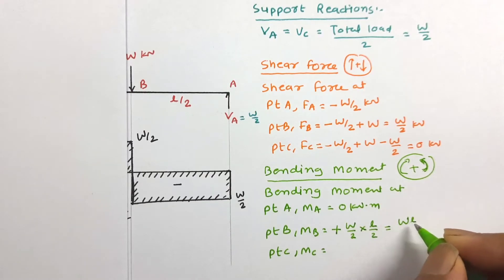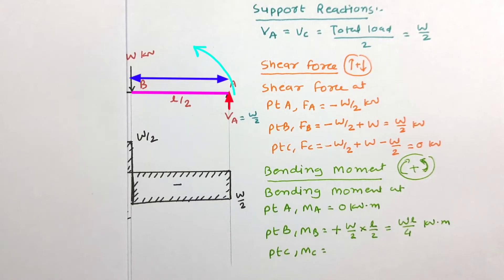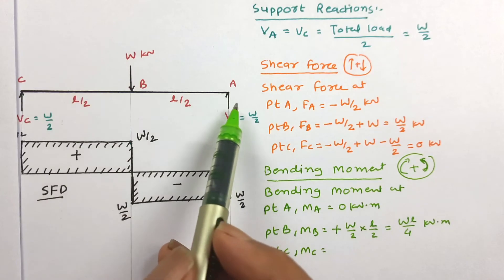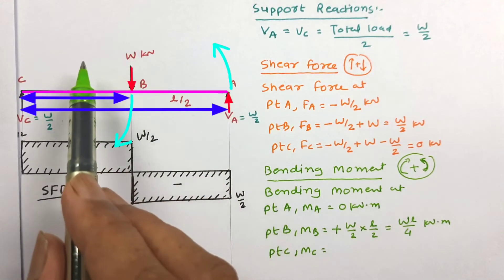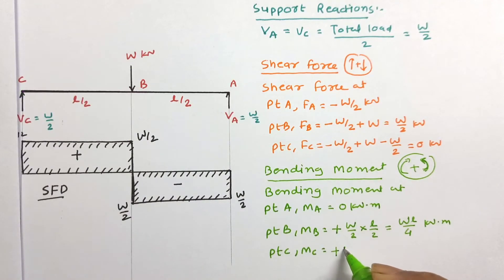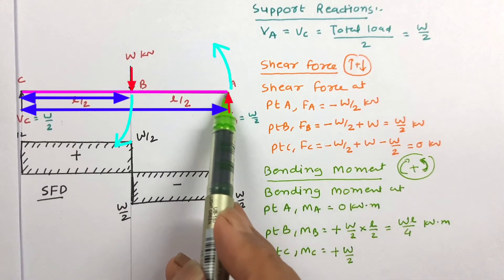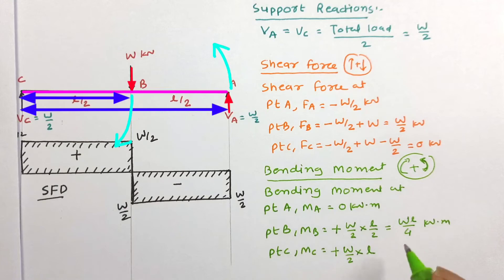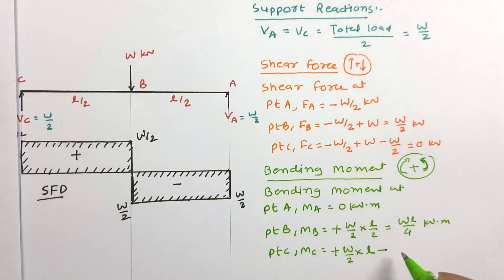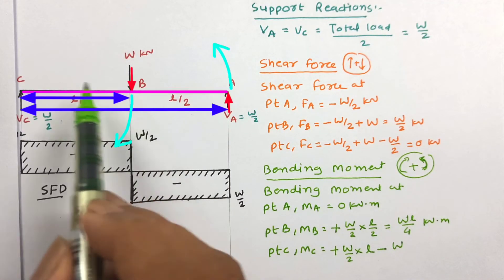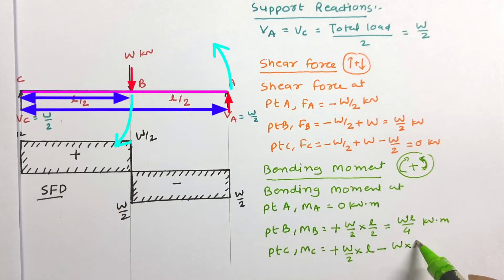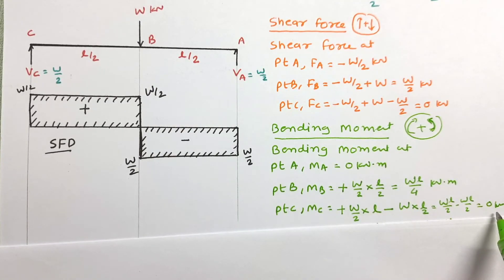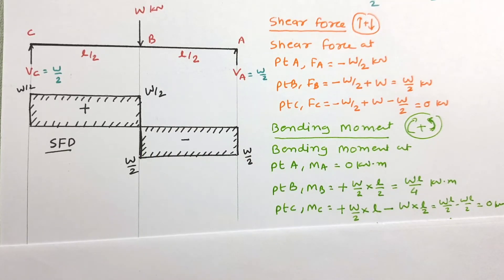At point C, the bending moment should be 0. Let us verify: Vc equal to W/2 creates an anticlockwise moment, so it is positive — W/2 times total span L. The point load W creates a clockwise moment, so it is negative — W times L/2. Simplifying: W/2 × L minus W × L/2 equals 0 kN·m. This confirms the bending moment at C is 0 kN·m.